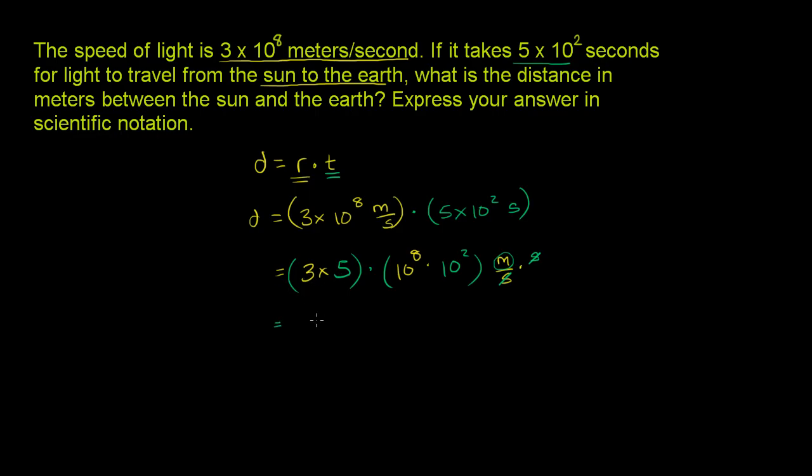So how does this simplify? This gives us 3 times 5 is 15. 15 times 10 to the eighth times 10 squared. We have the same base. We're taking the product, so we can add the exponents. So this is going to be 10 to the 8 plus 2 power, or 10 to the 10th power.